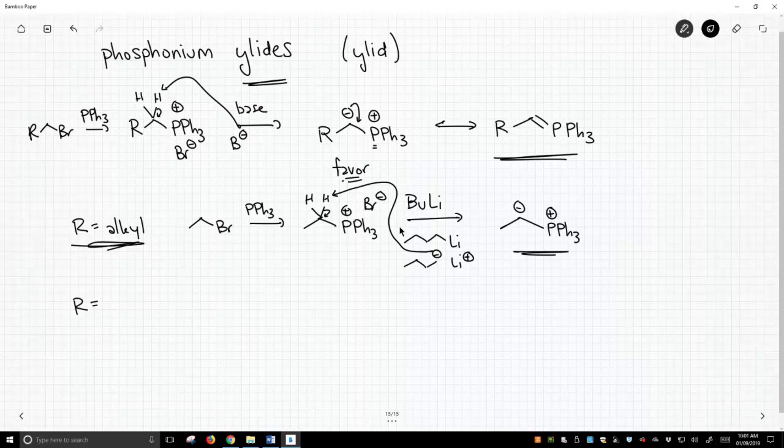Now, sometimes R will be an electron withdrawing group. So, you can imagine if we instead use this as our bromide to make our phosphonium salt, we're going to get a different SN2 product.